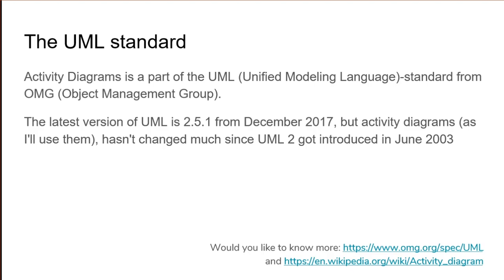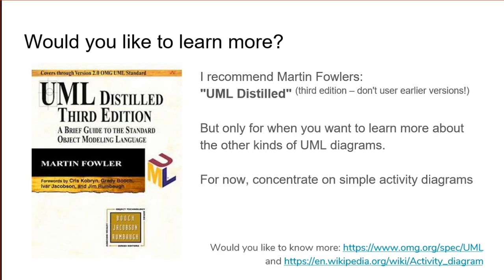If you would like to know more, you can — and I really stress the can — go and read the UML specification on the OMG website, but it's extremely hard to understand and I do not recommend it. You can just stick with Wikipedia and of course this video. If you really want to learn more about UML, I recommend Martin Fowler's book UML Distilled — be sure to get the third edition as it covers UML2. But for now, you can concentrate on simple activity diagrams as explained in this video.